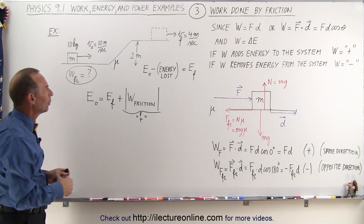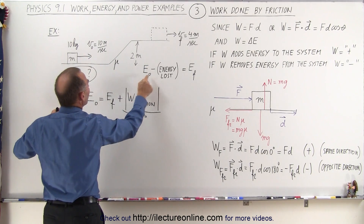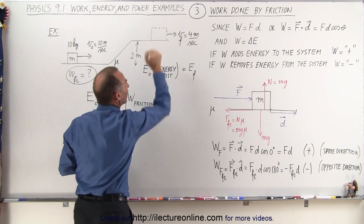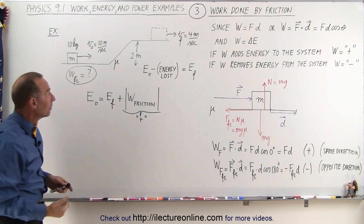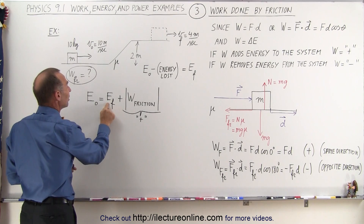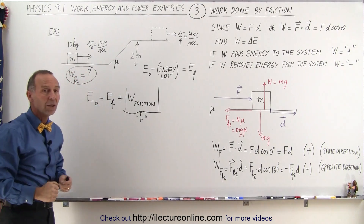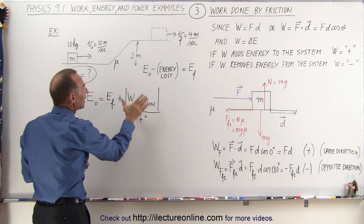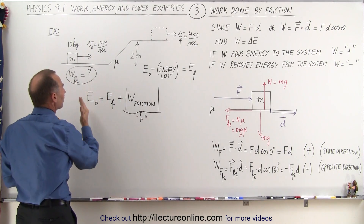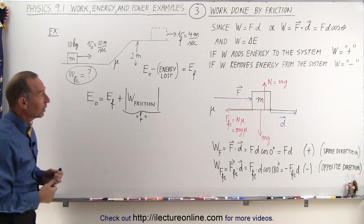There are two ways of looking at it. We can say that the initial energy the block had minus the energy lost due to friction equals the final energy when it gets to the top of the ramp. Another way is to say you have an initial amount of energy and a final amount of energy. The final energy will be smaller than the initial if energy was lost. So we add the energy lost due to friction as a positive quantity on the right side — either make it negative on the left side or positive on the right side, otherwise you won't get the right answer.